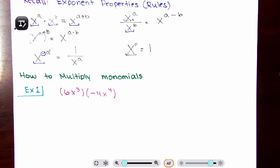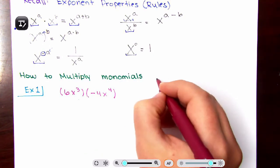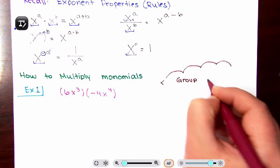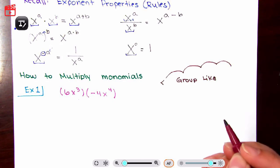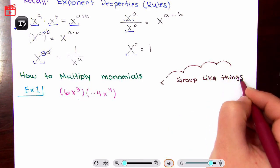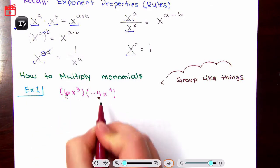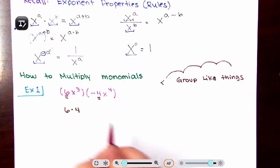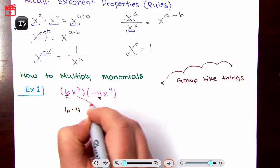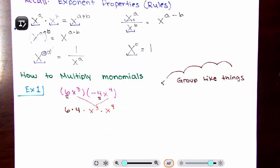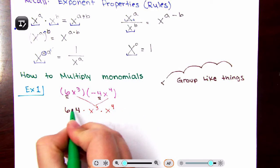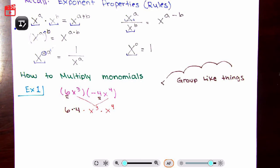So how do we actually multiply monomials? If you have a monomial times a monomial, you're going to combine like terms by simply grouping them — group terms that are like. So I see a 6 and a negative 4; those are numbers, so I'm going to say 6 times 4. Next, I see an x and an x to the 4th — the bases match, and that's why multiplication works out. The bases match, and this should be a negative 4 — that was my mistake. Then you simply multiply things that are alike together.